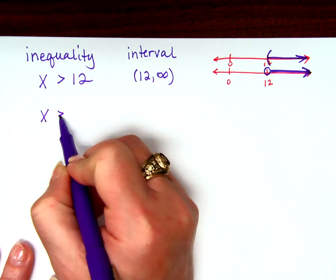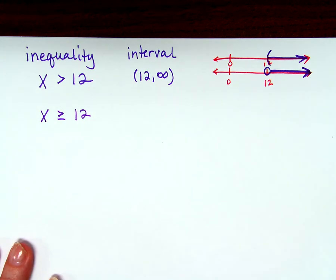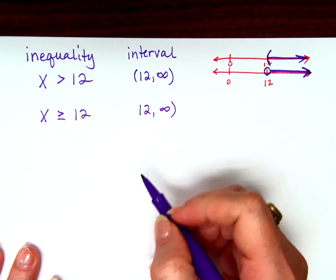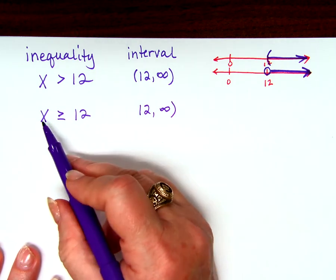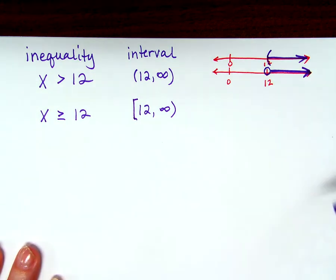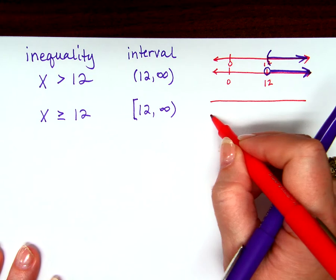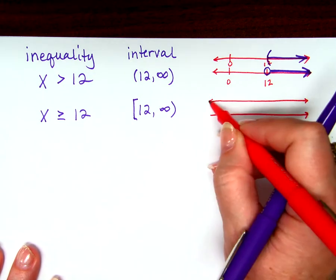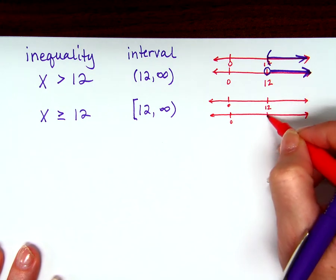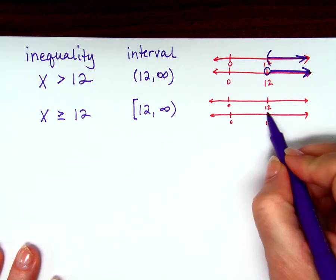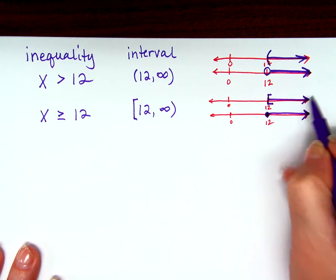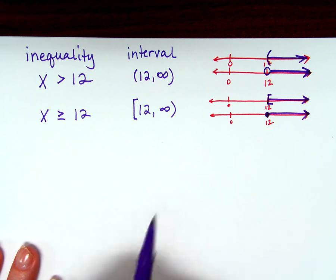What if it says x is greater than or equal to 12? What would that look like in interval notation? It would be from 12 to infinity again because it's everything greater than 12, but this time 12 is included because it's greater than or equal to 12 — so it's a bracket. We can either have a closed circle, which is what you're used to, or it can have a bracket shading that way.